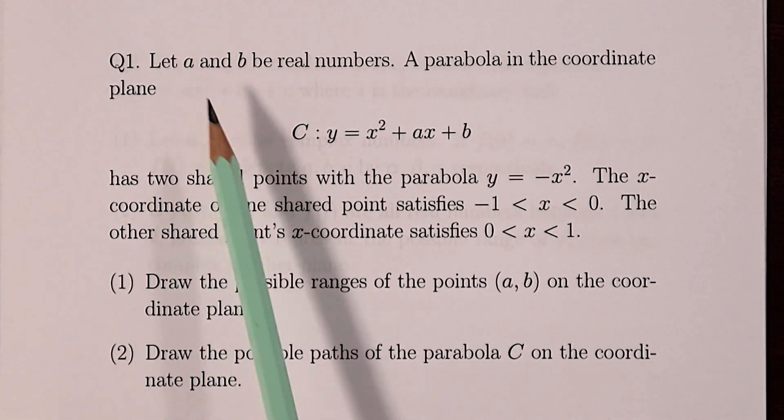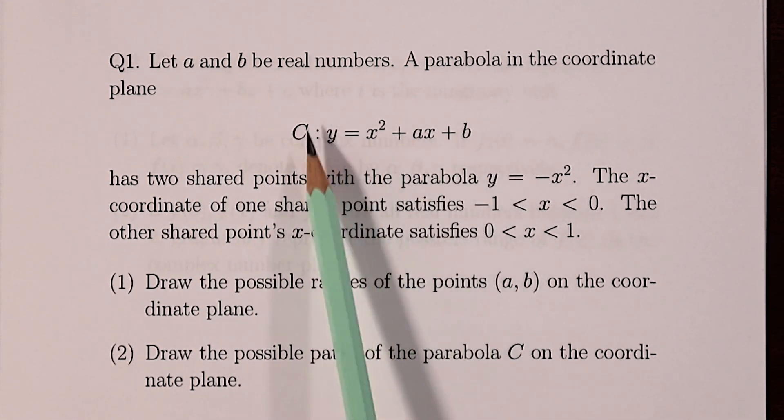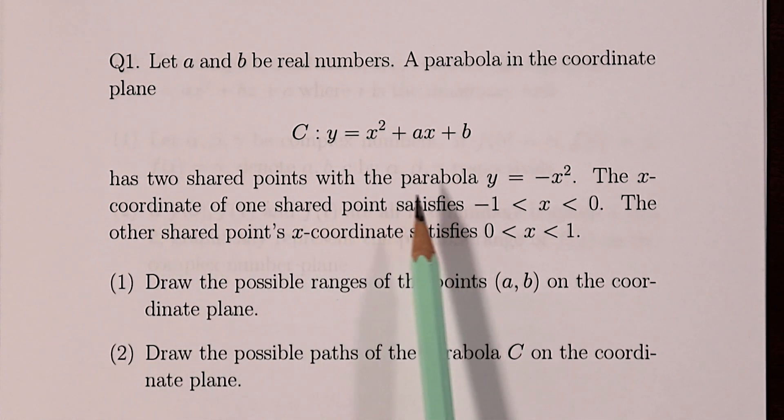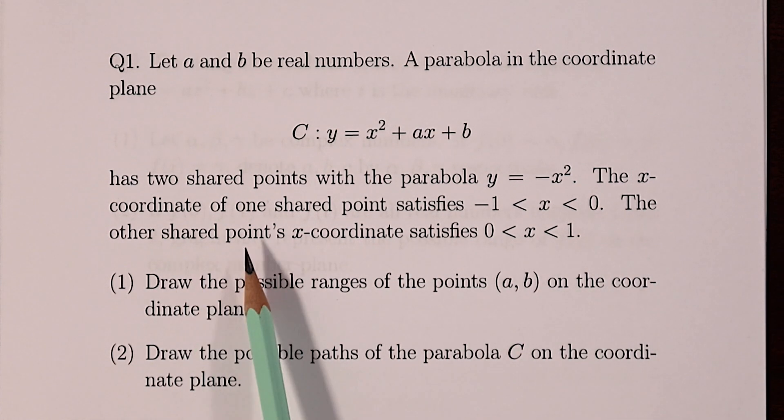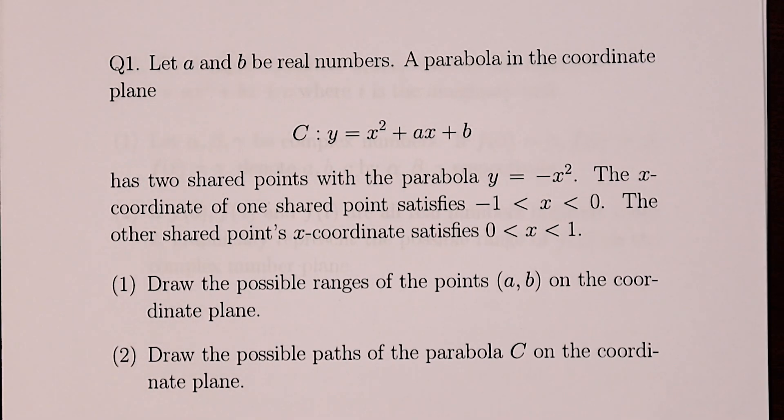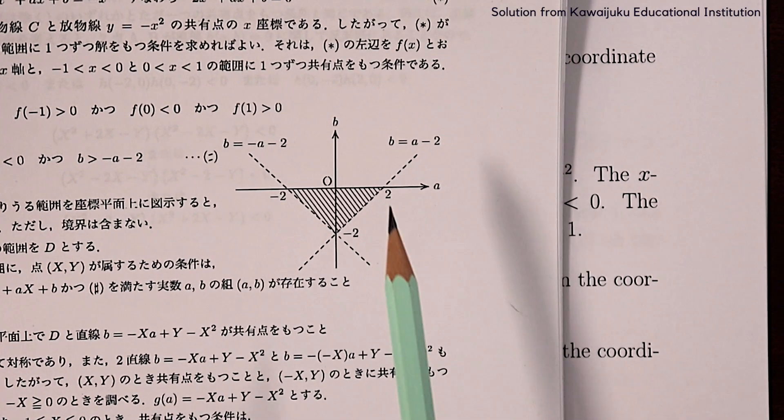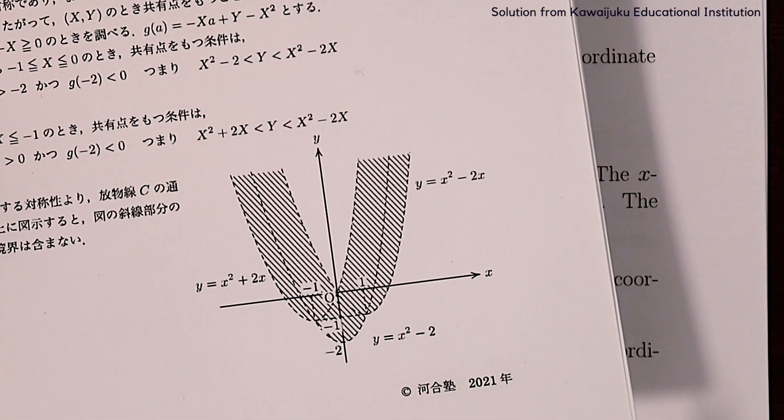For question one, a and b are real numbers and we have this parabola C which has two shared points with another parabola y equals minus x squared. The x coordinate of one shared point is between minus one and zero, and the other shared point's x coordinate is between zero and one. Part one asks to draw the possible ranges of the points a and b on the coordinate plane, and part two is to draw the possible paths of the parabola C on the coordinate plane.